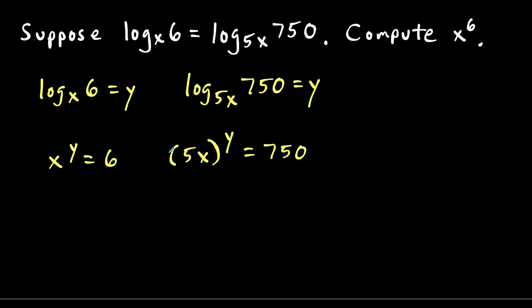Now that we have these two equations, it might be tricky to see, but notice we have x to the y equals 6. And we kind of have an x to the y here, but what we could do is use the law of exponents and rewrite this left side as 5 to the y power times x to the y power, and set this equal to 750.